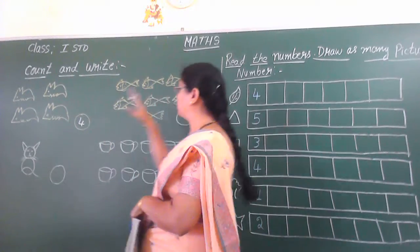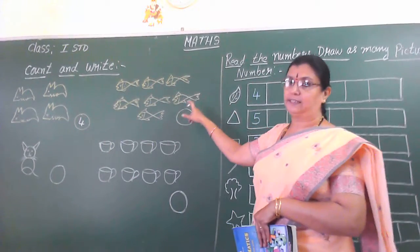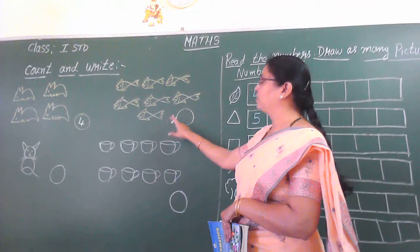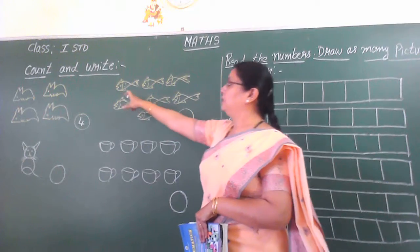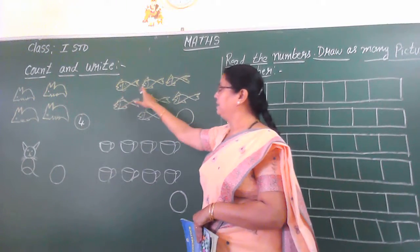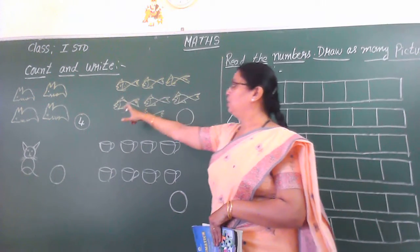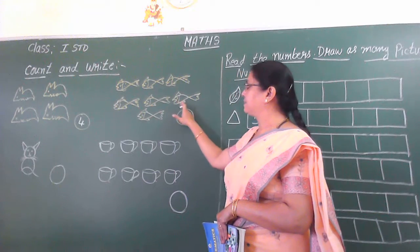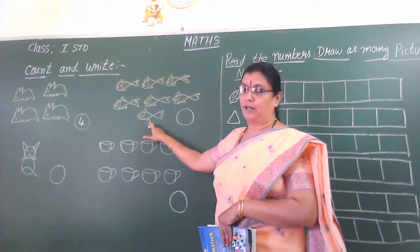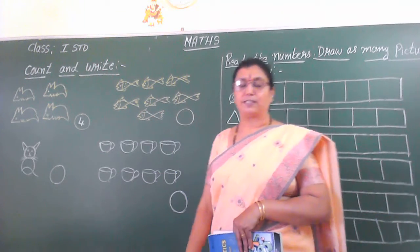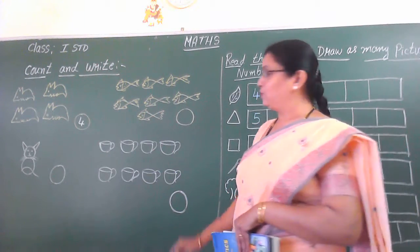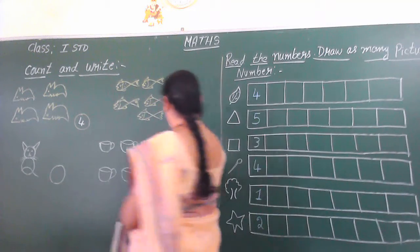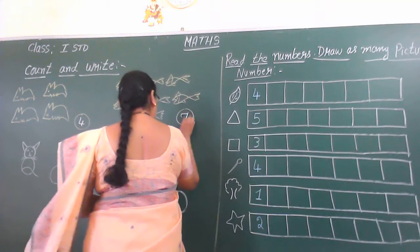In the next column, what is this? This is fish. You have to count the number. Count: one, two, three, four, five, six, seven. How many fishes are there? There are seven. So in the circle you have to write number seven.